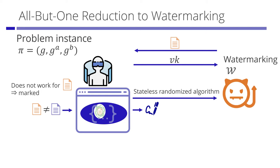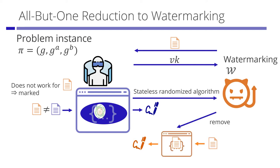Next, we consider giving the stateless randomized algorithm to the adversary. If the adversary outputs a function that outputs a valid signature for the target message, this means the adversary removed the mark. What does this fact mean? The all-but-one reduction for proving selective security works even if we replace the signature adversary with the watermarking adversary. The reduction can re-simulate the verification key and the watermarked signing function from the problem instance and extract the solution to the problem instance. This means that if the CDH assumption holds, the watermark is unremovable. Therefore, the hole works as a watermark.